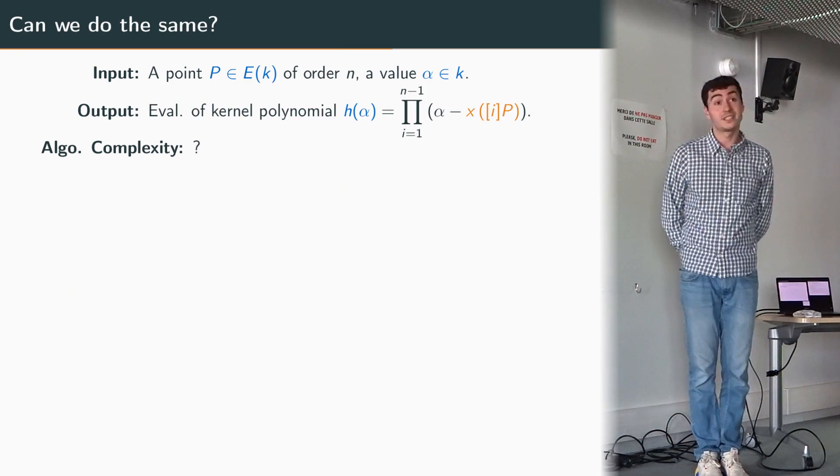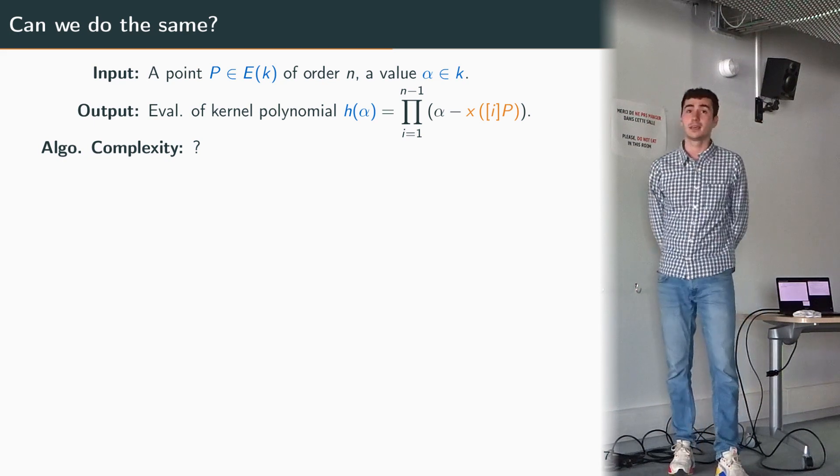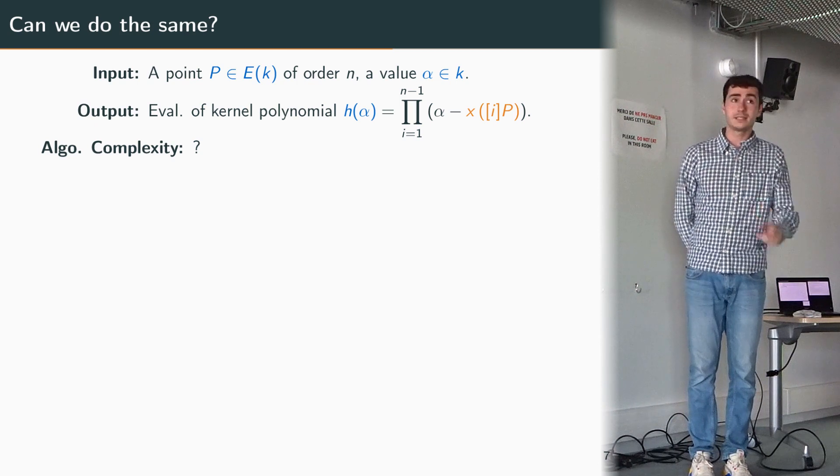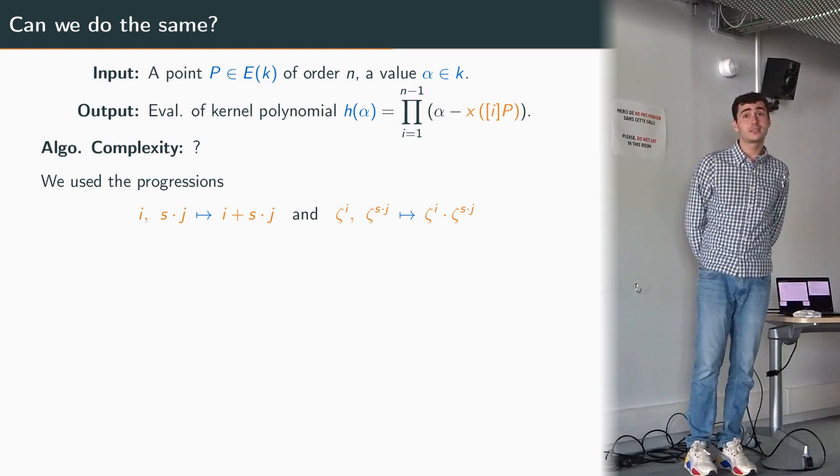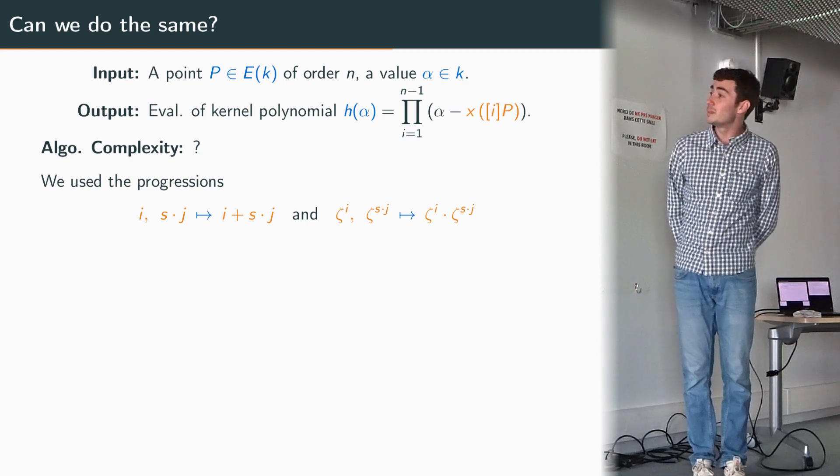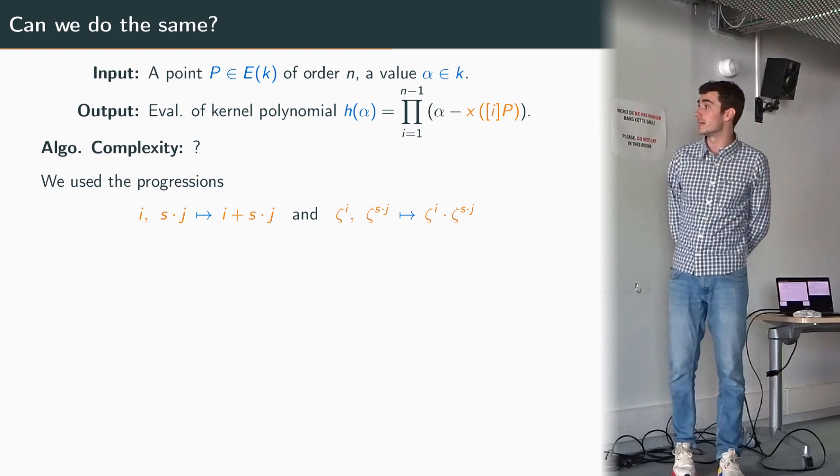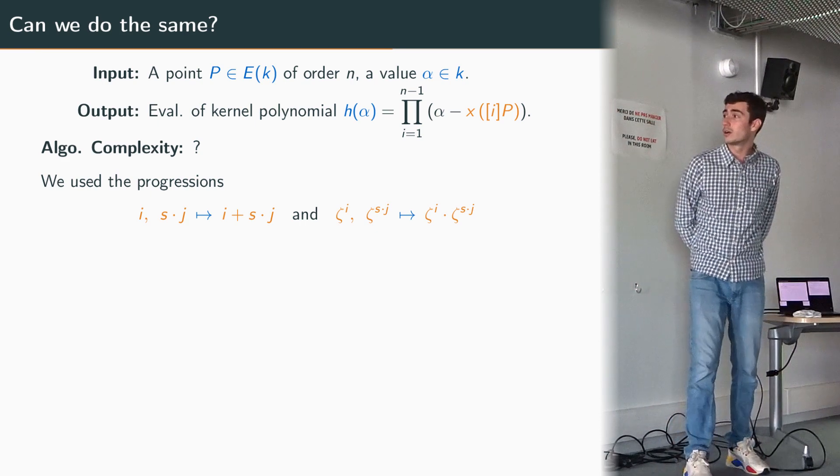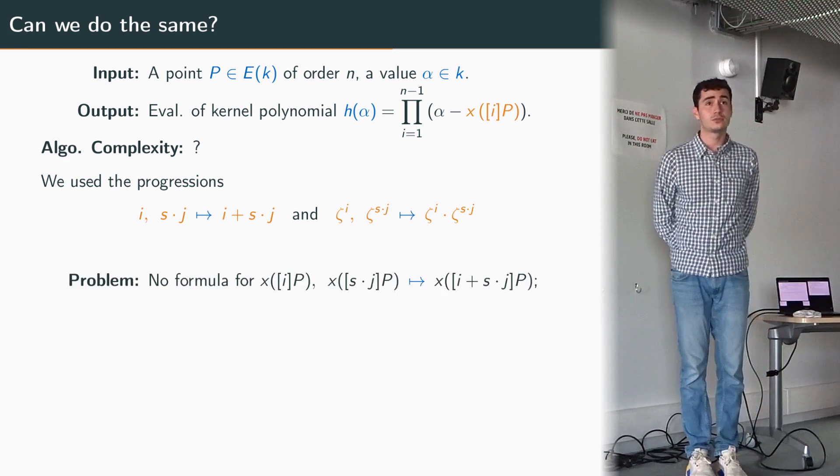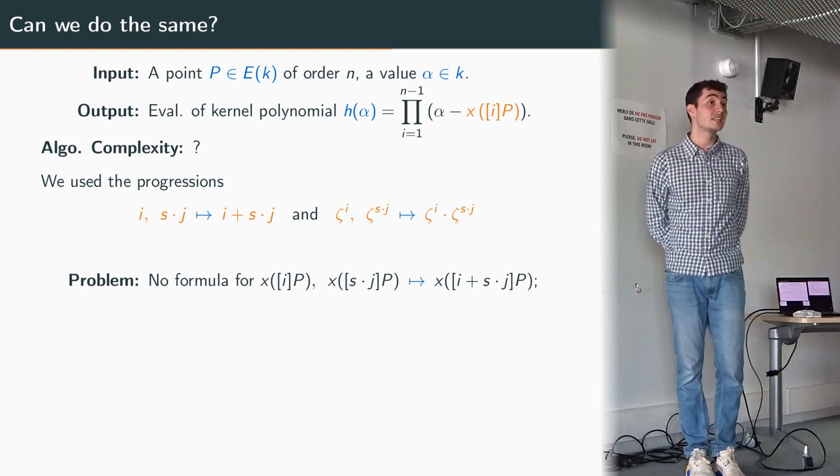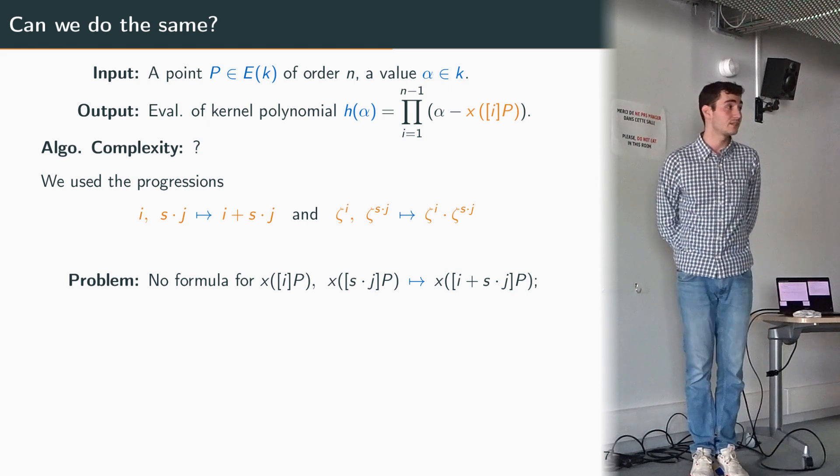So now that we have seen that, the question is can we do the same to our setting? After all we have this kind of group which is the group generated by P and the scalar multiples. So this seems to be quite close, but in fact this will just not work the same way. Indeed in our two examples we use these kind of progressions to transform the baby step and giant step into these progressions of the integers between 0 and s minus 1. These progressions are based on simple operations that are the addition and multiplication. But unfortunately we don't have such simple formula when it comes to x coordinates.